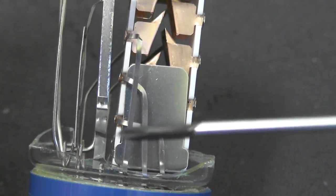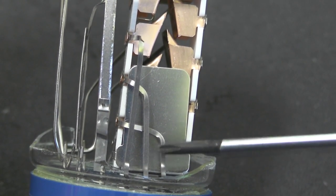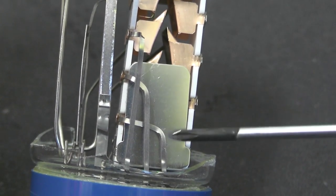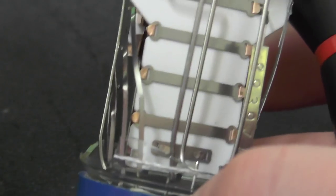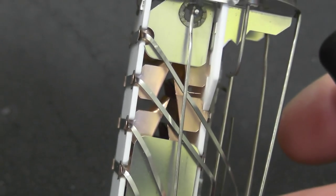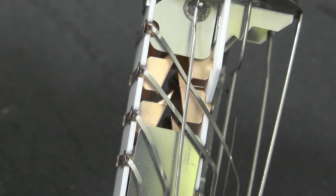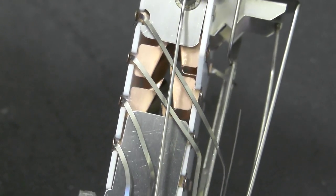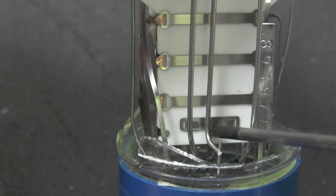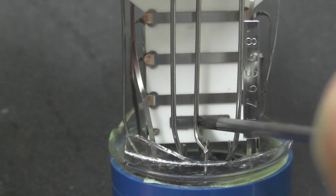So down at the side here, we can see the individual connections to each of the dynodes. One, two, three. And on the other side, we've got one, two, three, four. And this one at the base here, that's probably the anode.